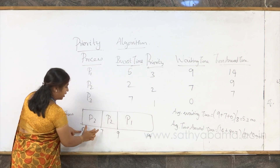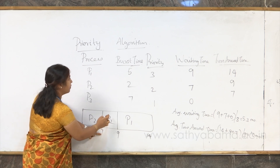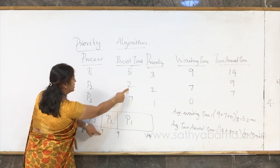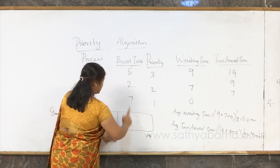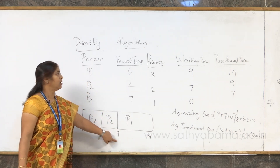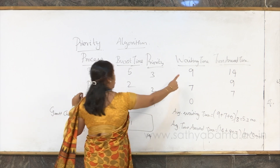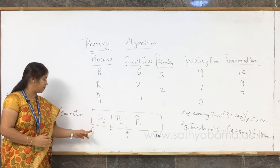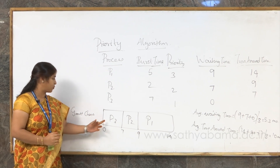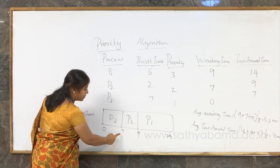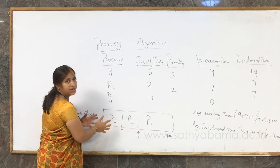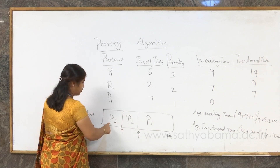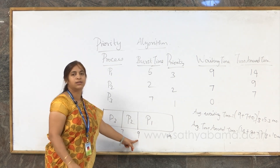In the Gantt chart, P3 gets the CPU immediately at 0 milliseconds because it has the first priority, and it holds the CPU for 7 milliseconds. After the 7th millisecond, P2 gets the CPU for 2 milliseconds. Then P1 gets the CPU, completing its task by the 14th millisecond. Waiting times: P3 waits 0 milliseconds, P2 waits 7 milliseconds, and P1 waits 9 milliseconds (waiting for both P3 and P2 to complete).